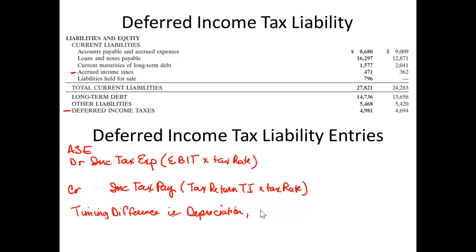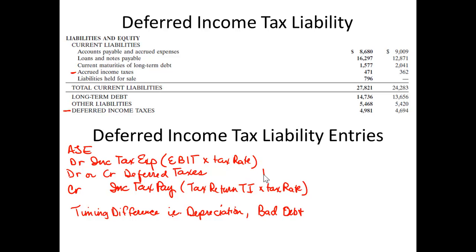Also, for tax purposes, the estimate of bad debts is not allowed and you only take actual bad debts, whereas for financial statement purposes, we make an adjusting journal entry every year setting up that allowance for bad debts, doubtful accounts, or uncollectable accounts. So these timing differences mean that our income tax expense will never be the same as income taxes payable, and we may need to debit or credit an account called deferred taxes.